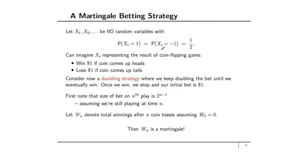In this example, we're going to consider what we call a martingale betting strategy. Let X1, X2, and so on be iid random variables, where Xi can take on two possible values: 1 or minus 1, each with probability 1/2. You can imagine Xi representing the result of a coin flipping game — you win $1 if the coin comes up heads, and you lose $1 if the coin comes up tails, assuming you bet $1 on the game. We're going to consider a doubling strategy, where we keep doubling the bet until we eventually win. Once we win, we stop, and our initial bet is $1.